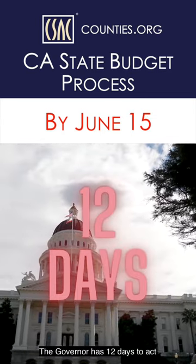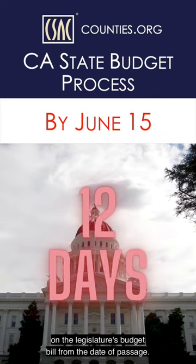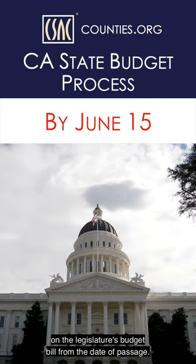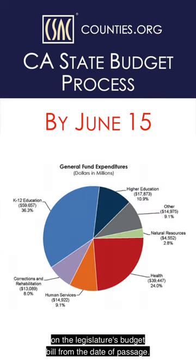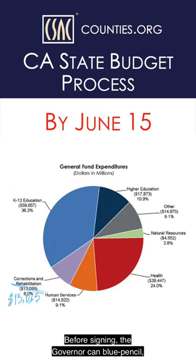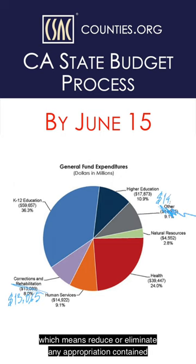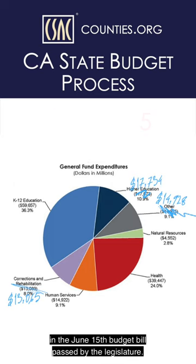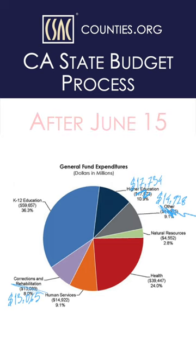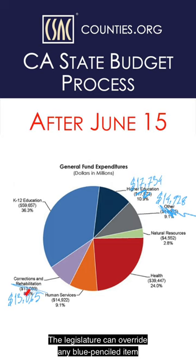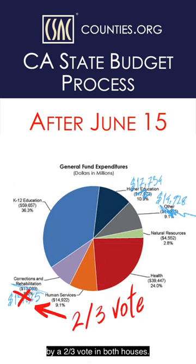The Governor has 12 days to act on the Legislature's budget bill from the date of passage. Before signing, the Governor can blue pencil — which means reduce or eliminate — any appropriation contained in the June 15th budget bill passed by the Legislature. The Legislature can override any blue-penciled item by a two-thirds vote in both Houses.